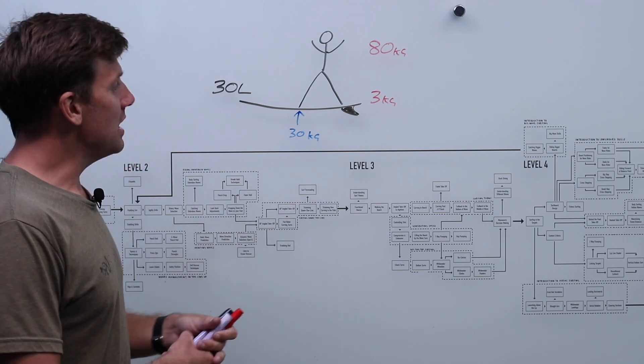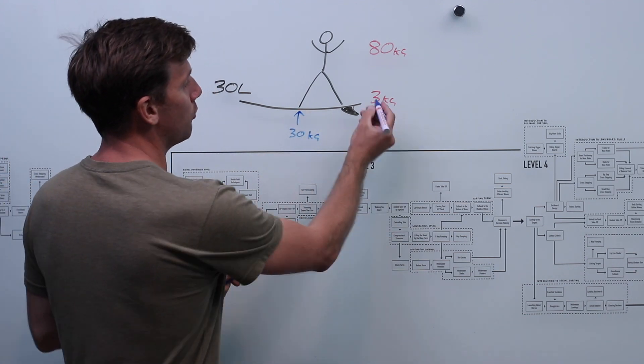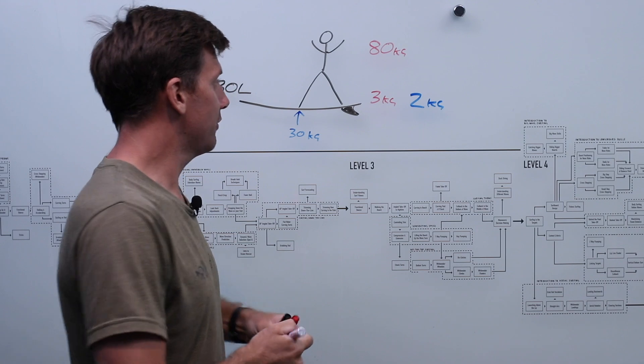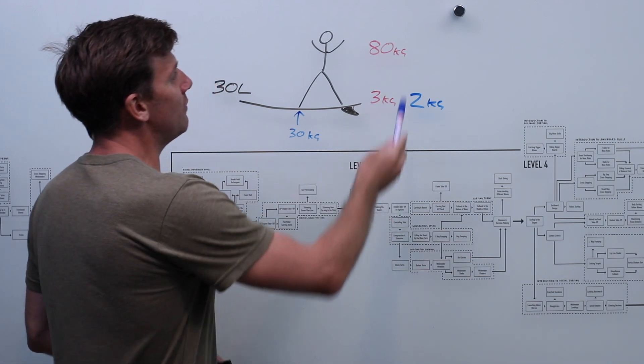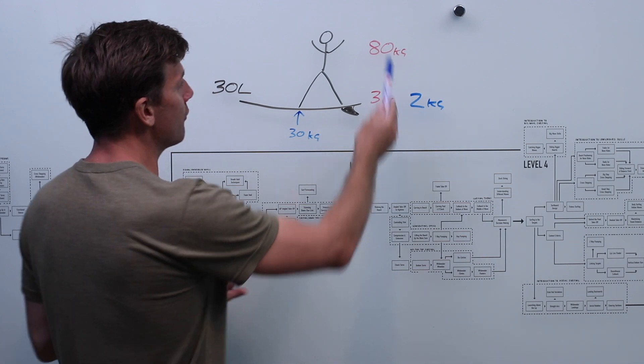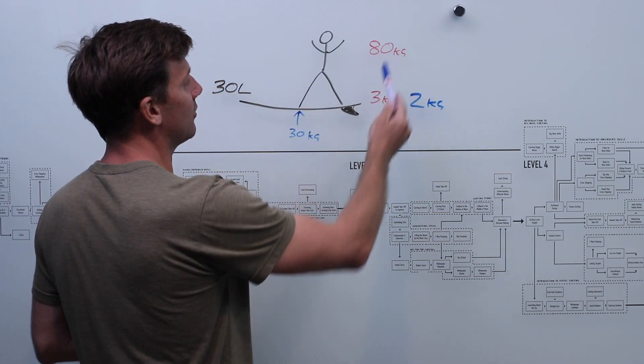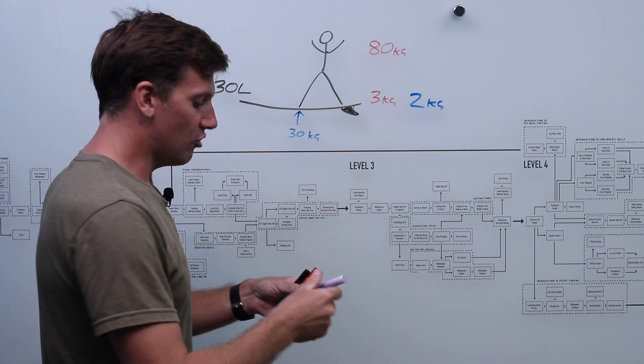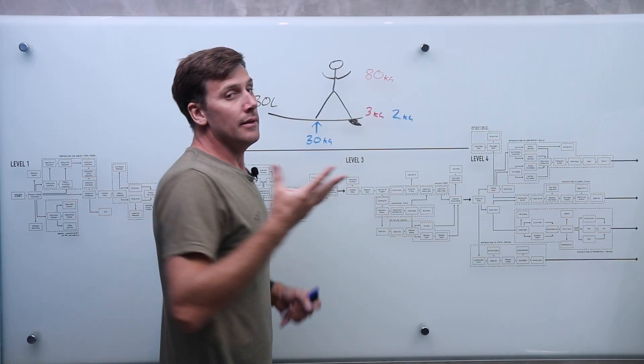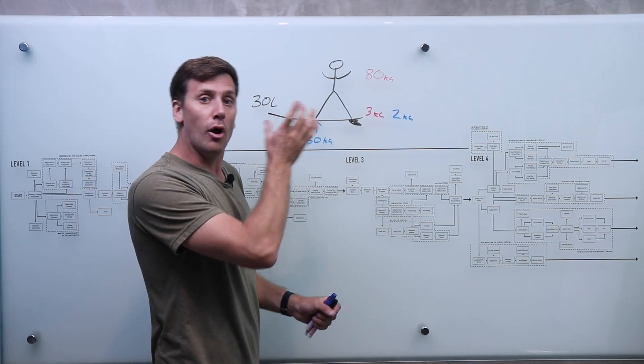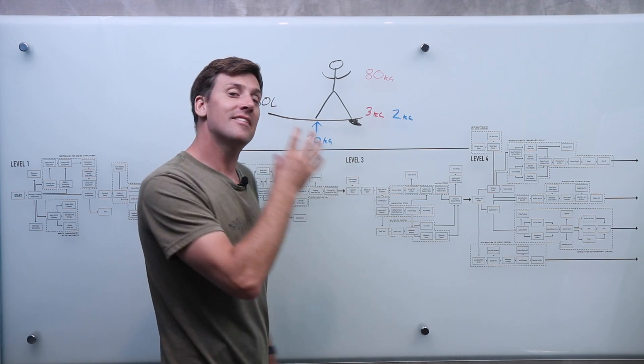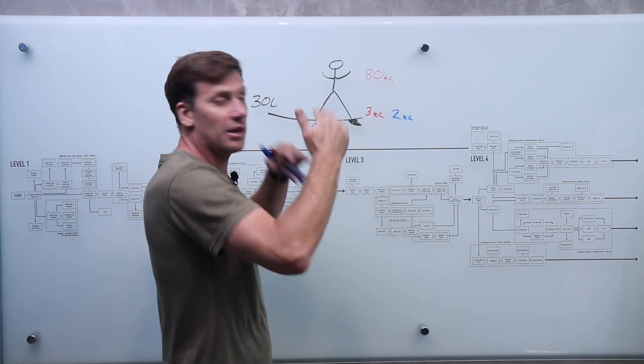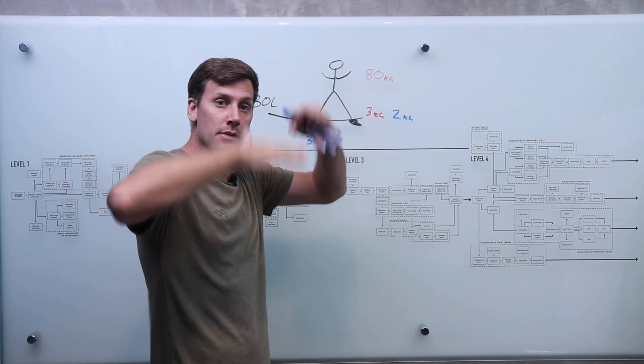Now, if we reduce the weight of the surfboard and we take the board down to a two kilogram board by using lightweight EPS foam in the middle, we've dropped, although the board has gotten much lighter, the overall package that is being supported has gone from 83 kilos to 82 kilos. Now that is a 1.2% difference. But the surfboard, the 300 newtons of positive buoyancy from the surfboard is still going to lift 30 kilos of weight above the surface of the water. Because that's the point where the system is balanced.